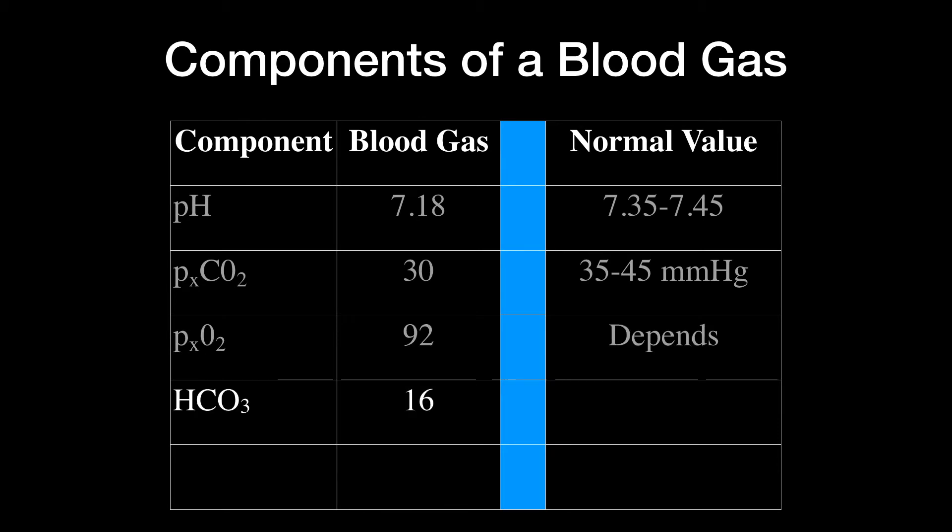Now moving on to the bicarb. In our case, the bicarb was 16. Normal bicarb is between 22 and 26 millimoles per liter.